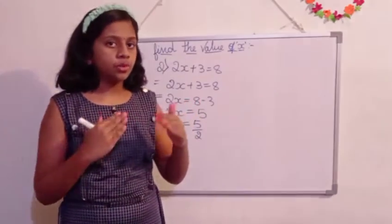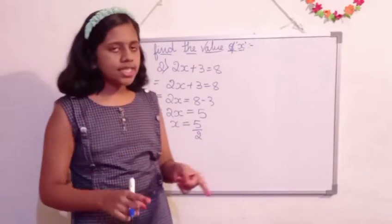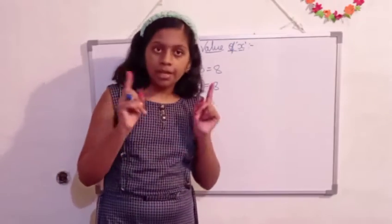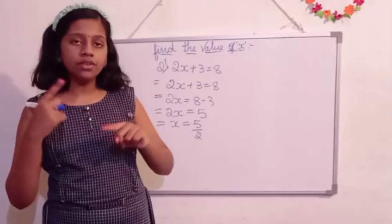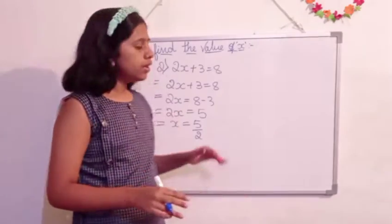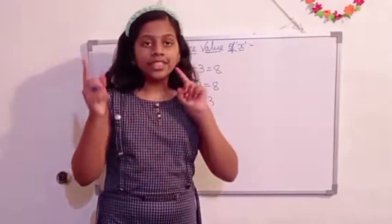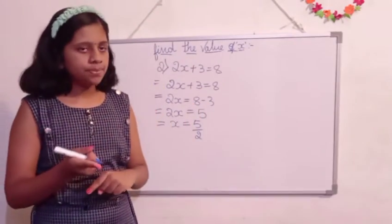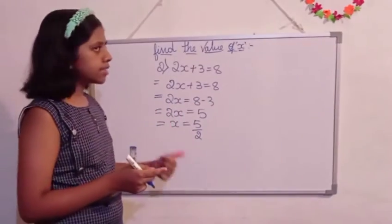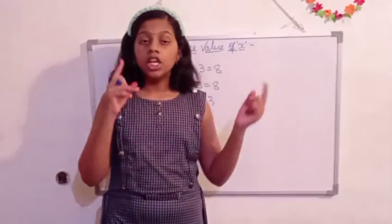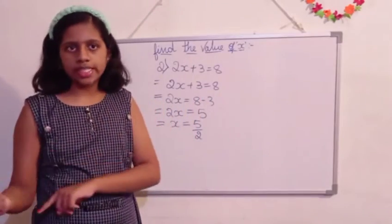As I said before, it is multiplication means it shifts to division. So here 2 was in the multiplication place. So it shifted to the division place. As 2x is there, 2x means it is multiplication only. 2 into x, 2x.